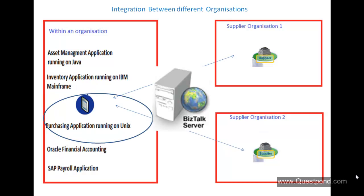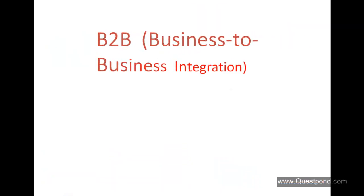In the previous example, we talked about the Purchasing application sending out purchase order requests. BizTalk Server sends out this purchase order request to the supplier organization. In return, the supplier organization sends some responses back to the Purchasing application. So what is BizTalk Server doing here? BizTalk Server is connecting two different applications from two different organizations. This example of connecting businesses of two different organizations is commonly referred to as B2B — Business-to-Business Integration.